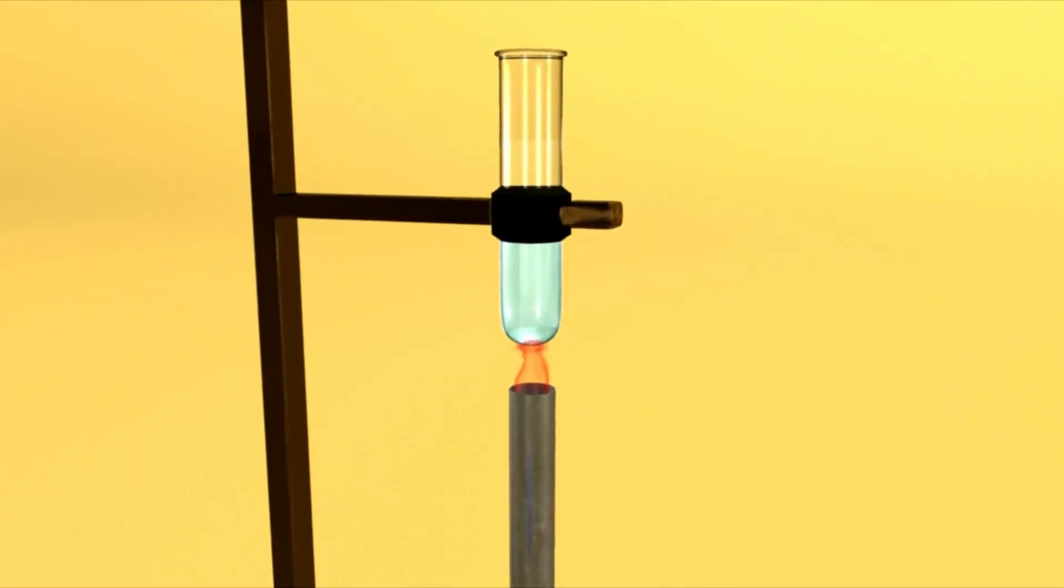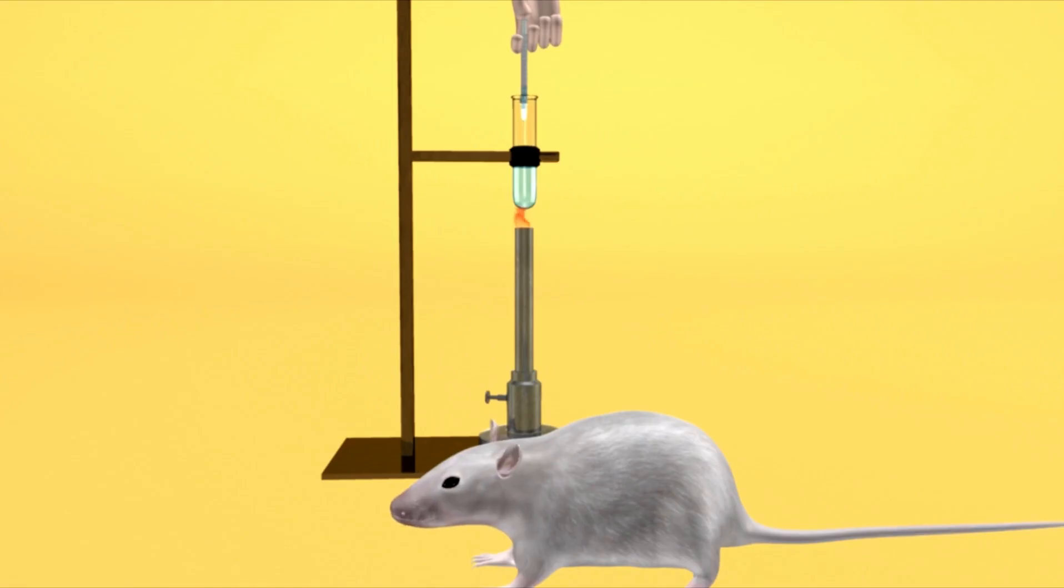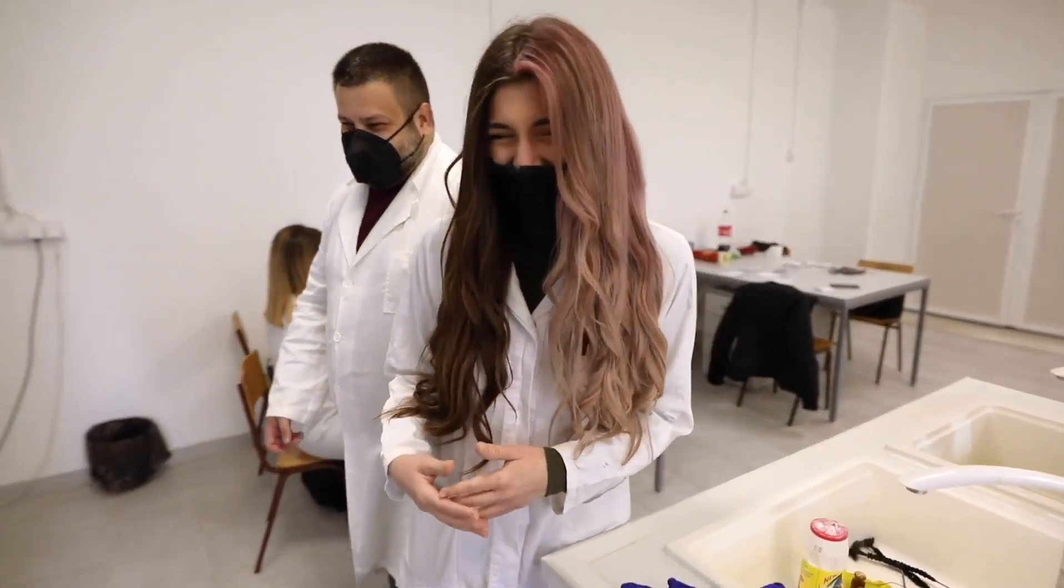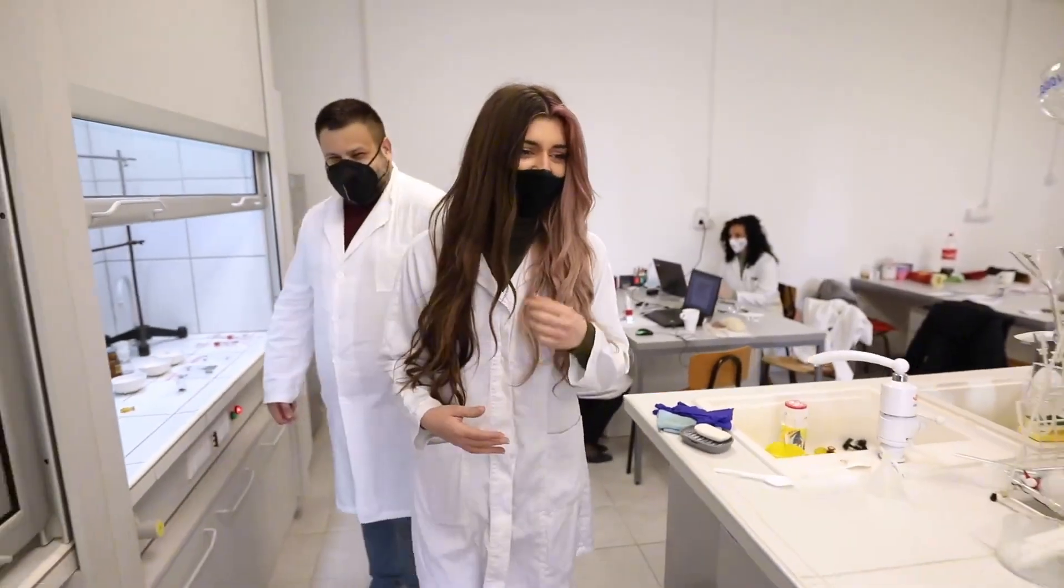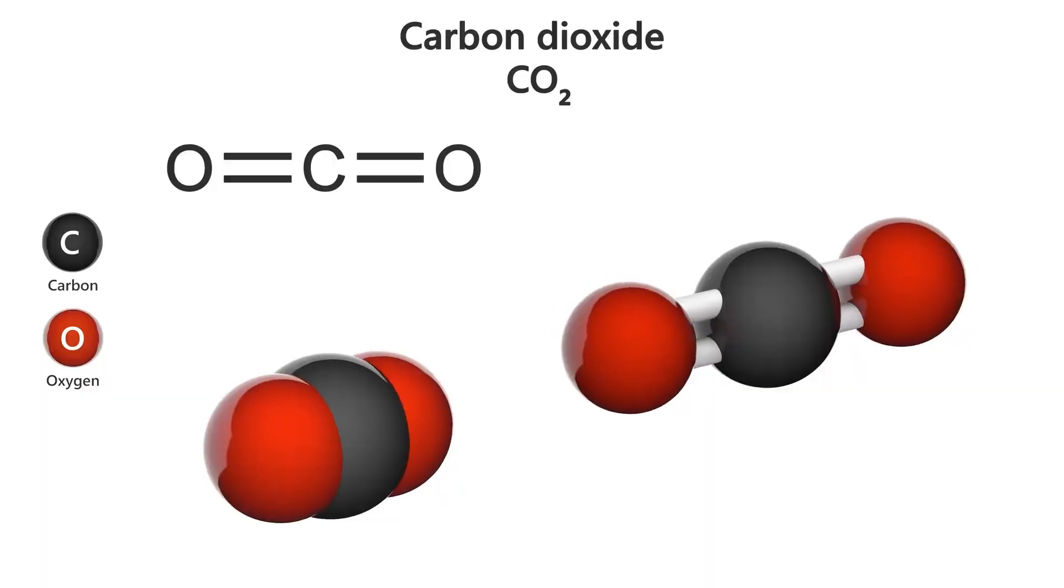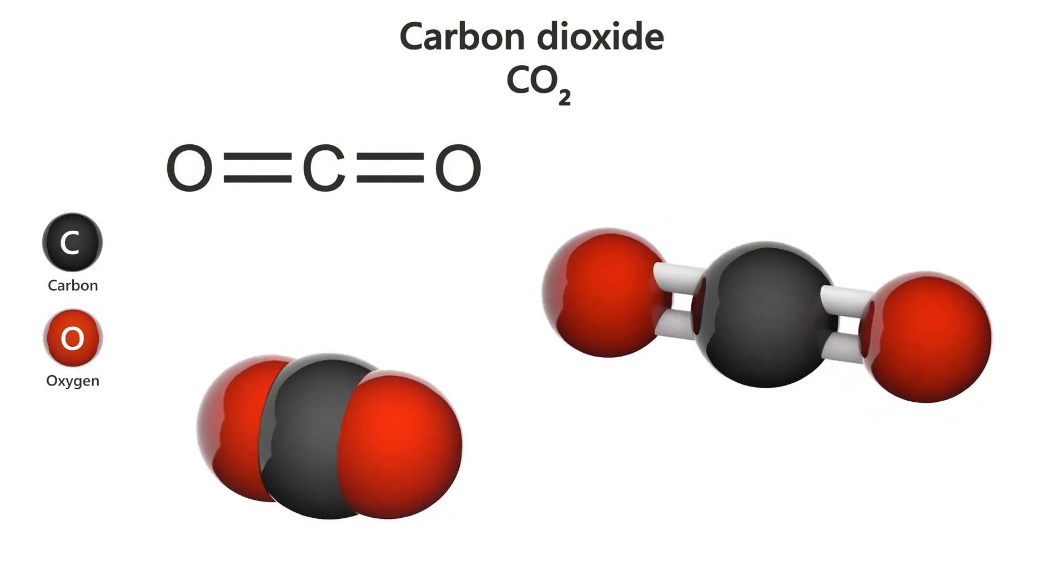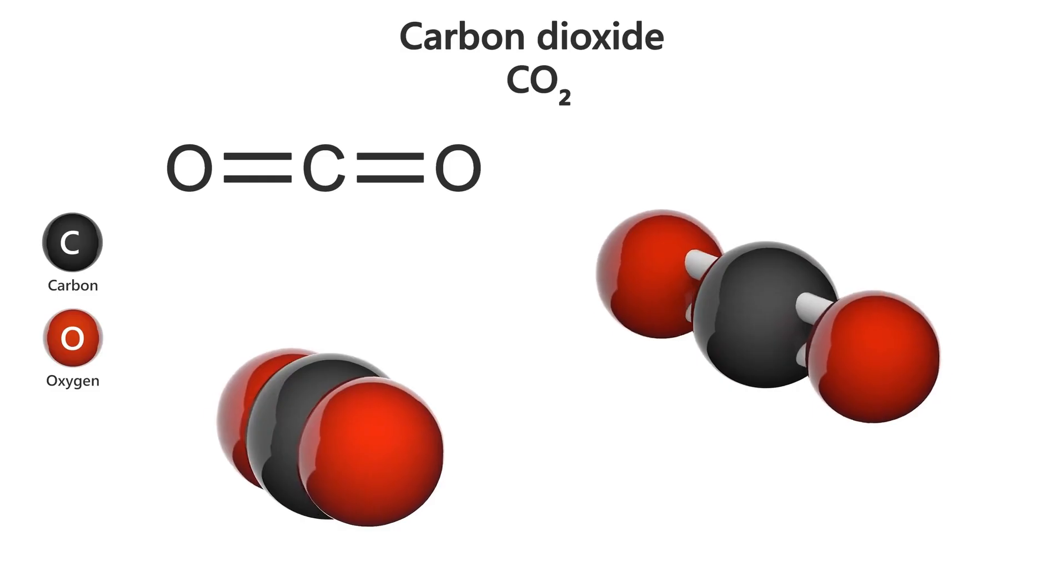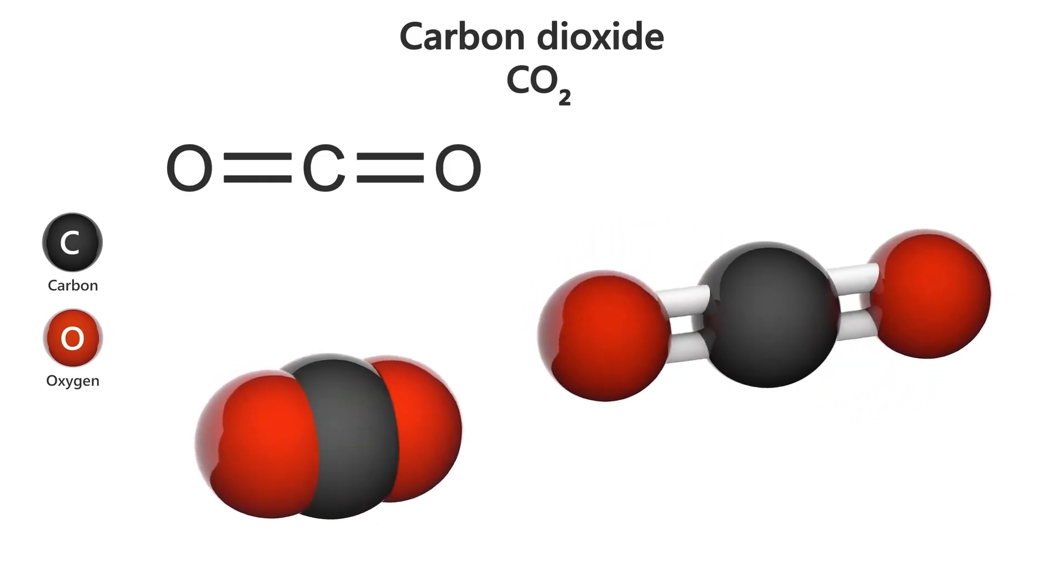Fortunately, K2-18b's host star is a red dwarf that emits less heat than our Sun. This is crucial because it means that despite the planet's proximity to its star, its surface isn't completely scorched. In fact, this lower luminosity could turn out to be a benefit, as it has allowed scientists to detect vaporized water in the planet's atmosphere. This discovery adds to the growing evidence that K2-18b might just have the conditions necessary to support life.